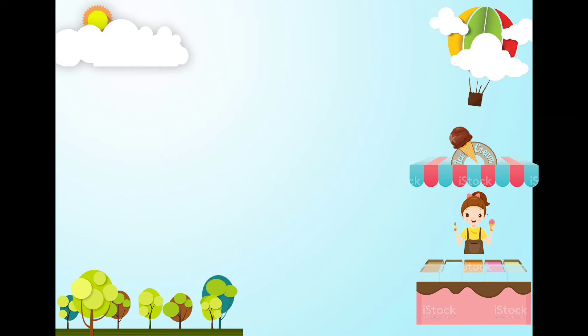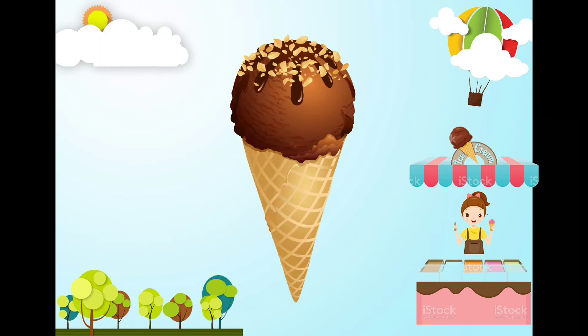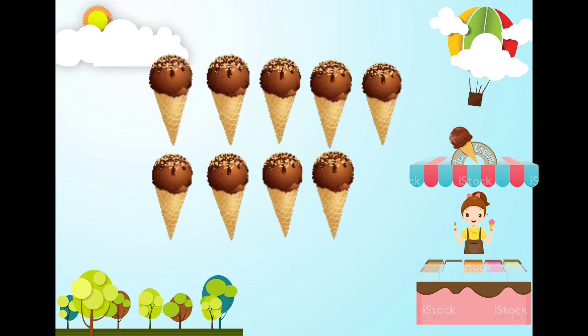My friend, Gob, wants to have an ice cream too. And, I will give him 1. Now, let's do the subtraction. 9 ice creams minus 1 ice cream. Let's count if how many are left. 1, 2, 3, 4, 5, 6, 7, 8. And, you've got it. 9 minus 1 is equal to 8. Very good.